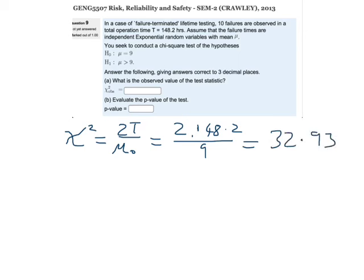Now, evaluate the p-value of the test. So, what we need to do is come down to our chi-squared table, and we need some degrees of freedom here. So, how many degrees of freedom have we got?